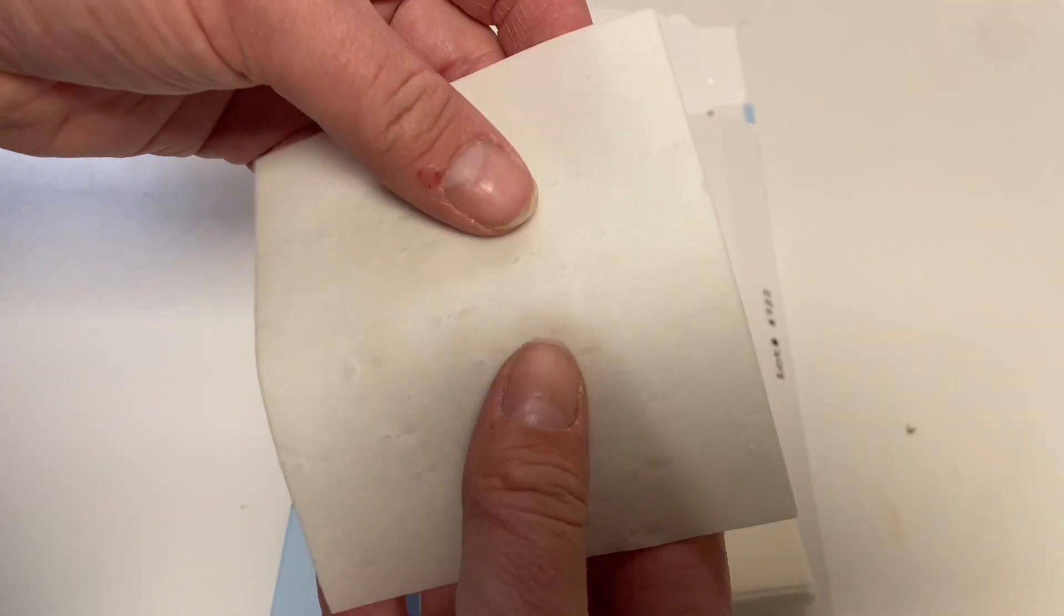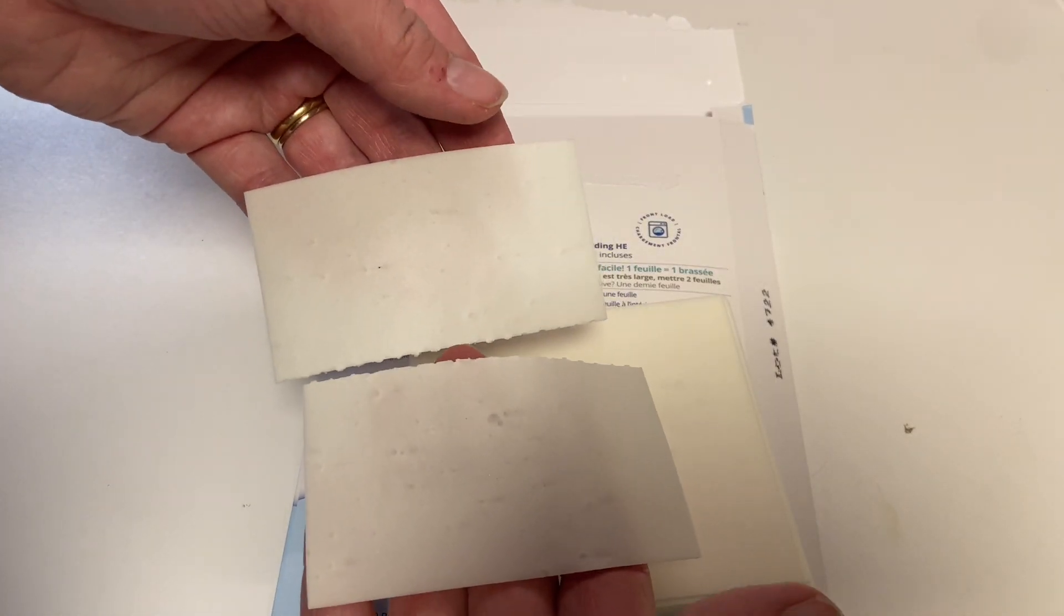You just tear it in half, and then half of the strip, so one whole side of it, is one load of laundry.